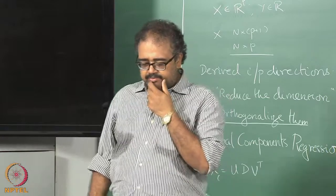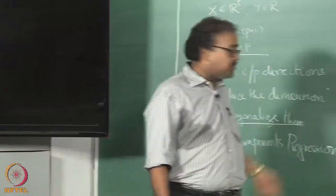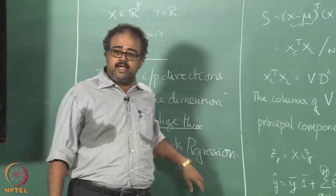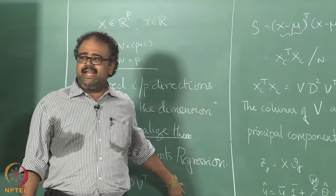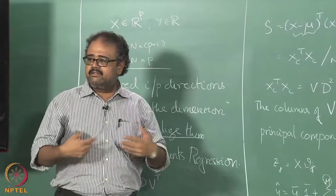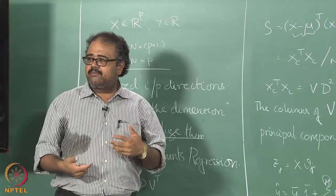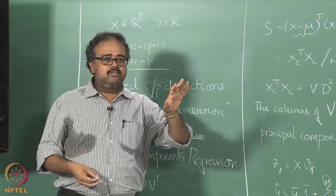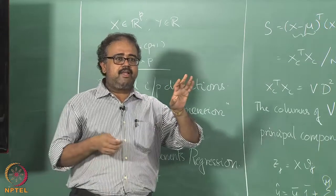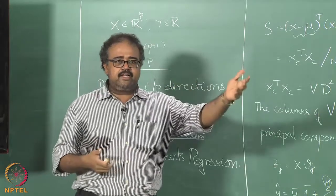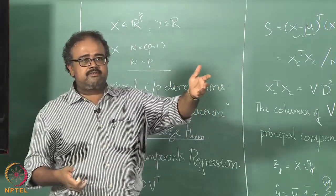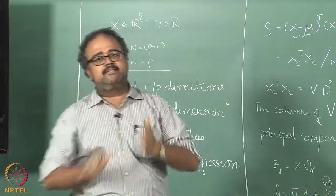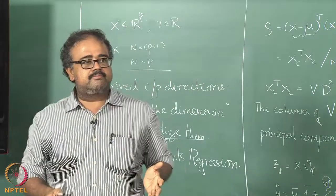One drawback of principal component regression is that I am only looking at the input data, not the output. It could very well be that once I consider what the output is, I might want to change the directions a little bit.